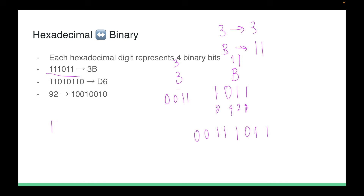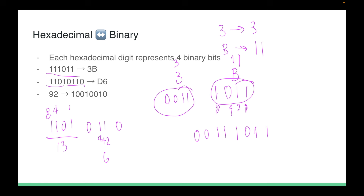Similarly, to convert binary to hex: take 11011010. Split into groups of four: 1101 and 1010. Wait — 1101 = 8+4+1 = 13 = D in hex, and 0110 = 4+2 = 6. So the answer is D6. In summary: every hexadecimal digit equals four binary digits. To convert, change each hex digit to denary then to binary, or split binary into groups of four and convert each group to a hex digit.